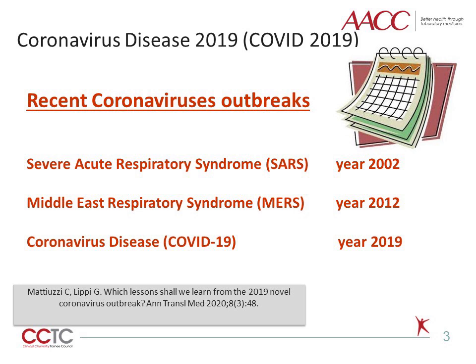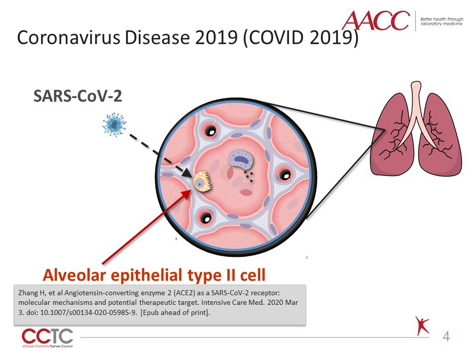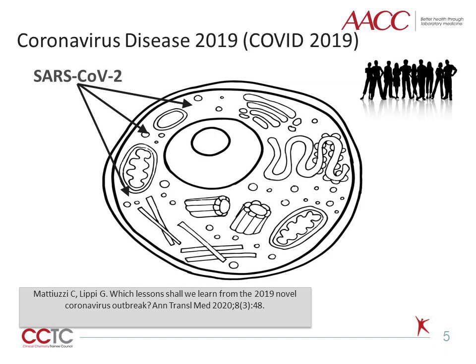The COVID-19 outbreak is the third documented spillover of animal coronaviruses to humans during the past two decades, after Severe Acute Respiratory Syndrome in 2002 and Middle East Respiratory Syndrome in 2012. A recent study has shown that SARS-CoV-2 mainly targets the alveolar epithelial type 2 cells, which function as a reservoir for viral invasion in lung tissue.